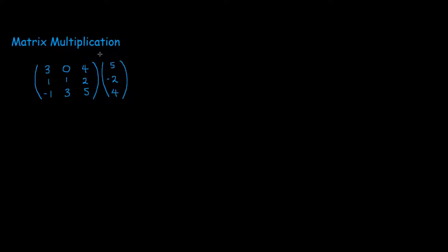Firstly, we should talk about the dimensions of matrices because that is extremely important in knowing which matrices cannot be multiplied. For example, this matrix here is a 3x3. The first 3 represents the number of rows and the second 3 represents the number of columns. This matrix over here is a 3x1 because there are 3 rows but only one column. So 3 rows means 3 horizontal rows and 3 columns means 3 vertical columns.